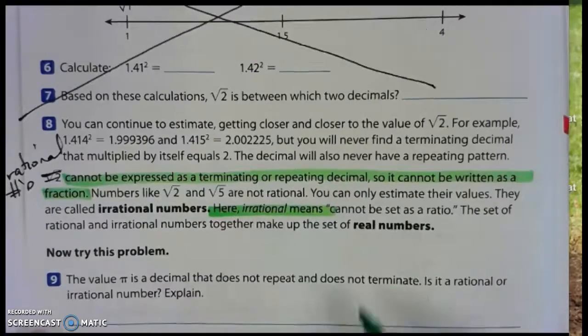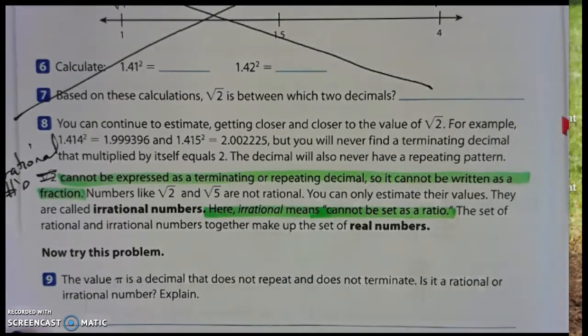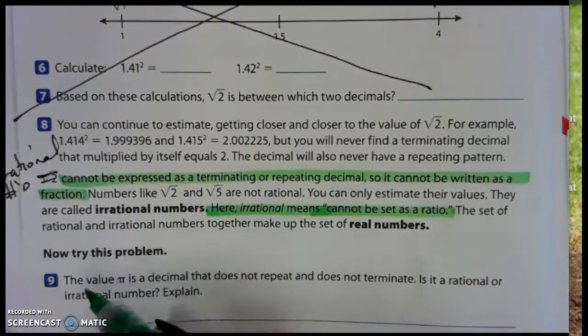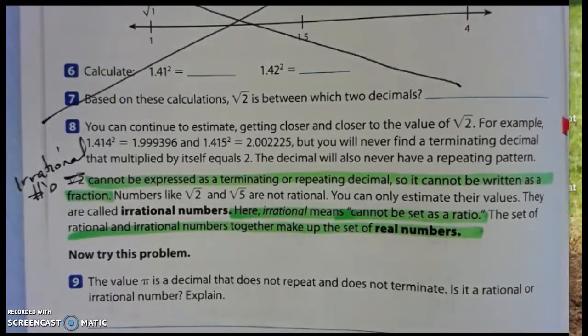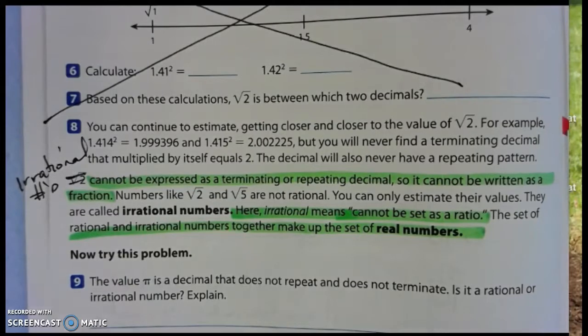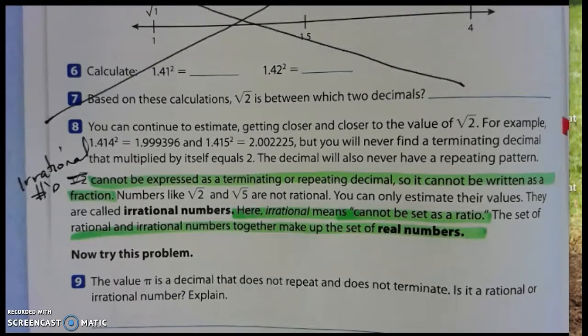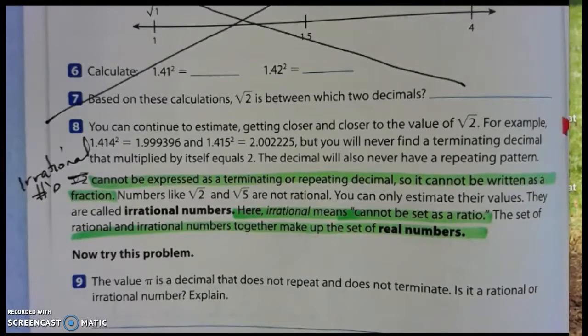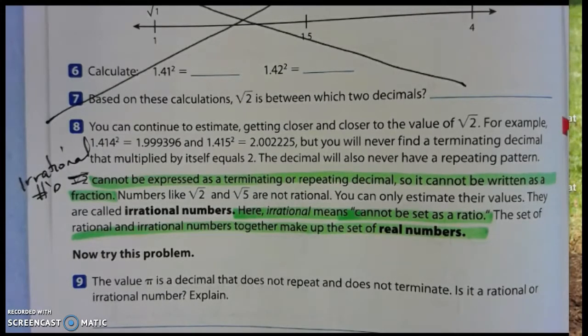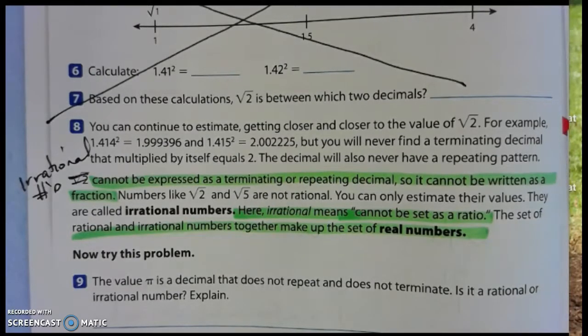Irrational numbers cannot be expressed as a terminating or repeating decimal, so it cannot be written as a fraction. There's your definition. The word irrational means cannot be set as a ratio. It means it cannot be written as a fraction. The set of rational and irrational numbers make up the set of real numbers. All of this is on your graphic organizer. Rational numbers terminate, they are whole numbers, or they are repeating decimals. You're going to see the end or see the pattern.